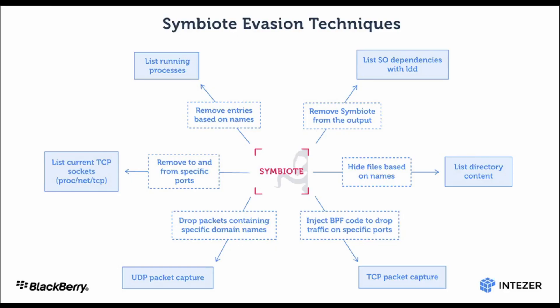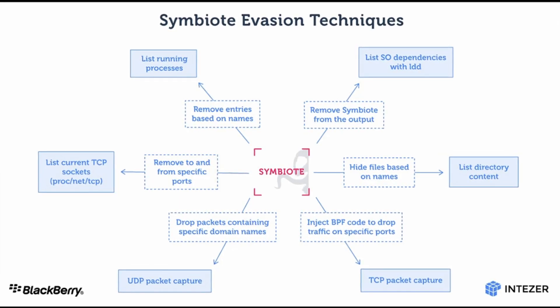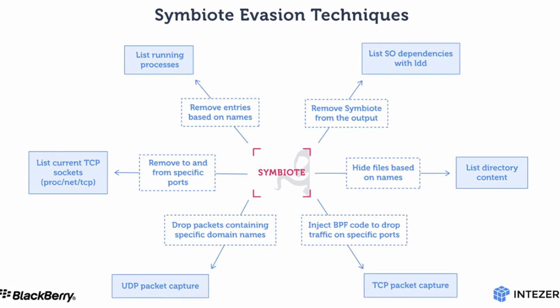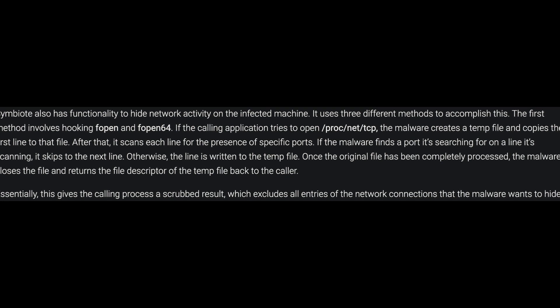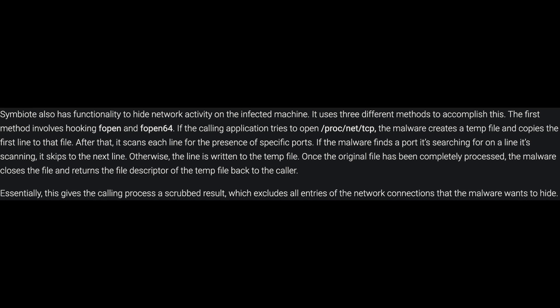The research article includes a mind map showing Symbiote's evasion techniques: it removes itself from process output, injects BPF code to drop traffic on specific ports, and hides files based on names. One particularly interesting technique involves log manipulation — it creates a new file in the temp folder and copies every log line except those referencing the port it's using. It then deletes the old log file and substitutes the new one, making it hard for analysts to trust the logs they're reviewing.